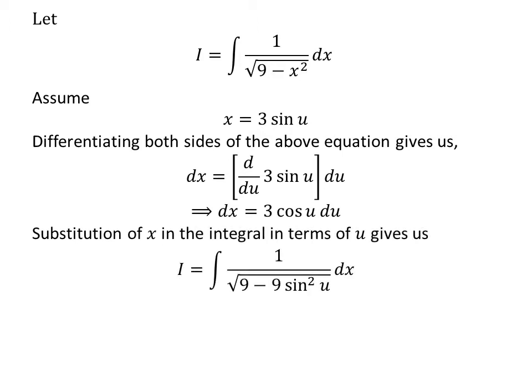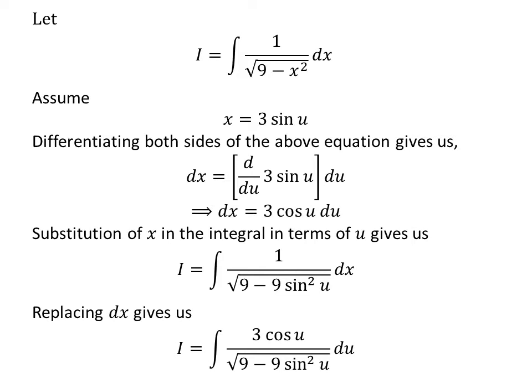Substitution of x in the integral I gives us I is equal to the integral of 1 upon square root of 9 minus 9 times square of sine of u. Let us replace differential of x by its value found earlier, so I is equal to the integral of 3 times cosine of u upon square root of 9 minus 9 times square of sine of u.